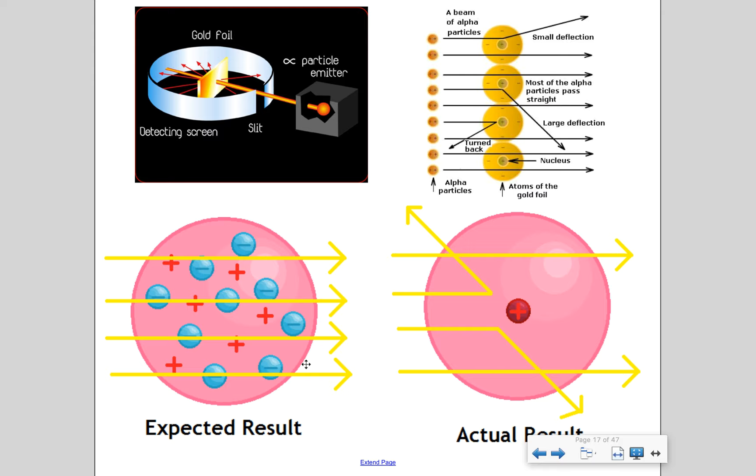So the expected results was that if the negative and the positive charges were evenly distributed, kind of like in that plum pudding model, then these alpha particles should just go straight on through. But that was not the case. We got a lot of weird deflections. And so they were like, what's going on here? Our nucleus must be densely packed. That's where you find all the positive charges of it.